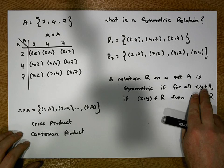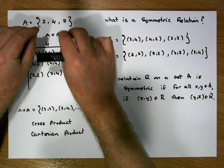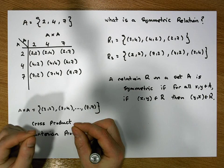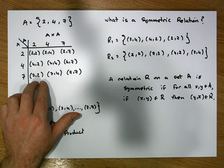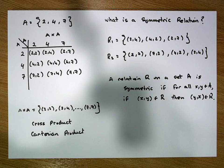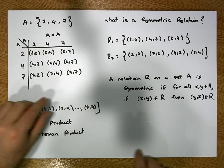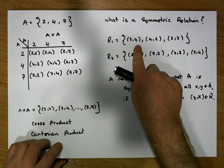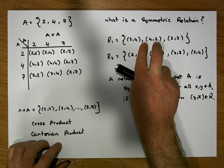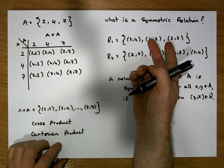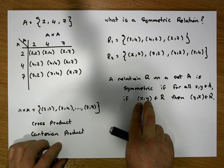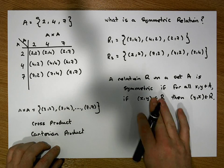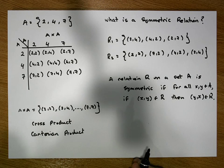What it's really saying is this: if you keep choosing two values from the set — call them x and y — the cross product gives us all the possible ways of choosing two values from set A. If a particular ordered pair is in our relation, then when we flip the x and y to create a new ordered pair, that flipped pair must also be in the relation. That is our definition of a symmetric relation.